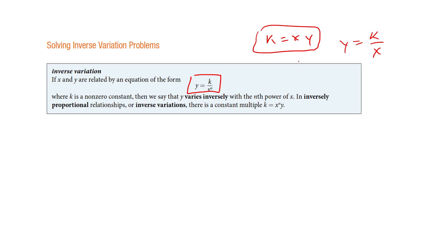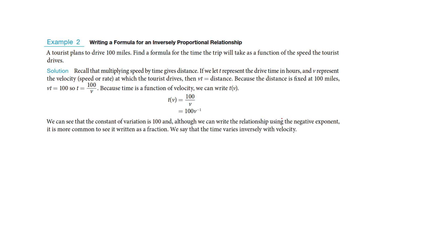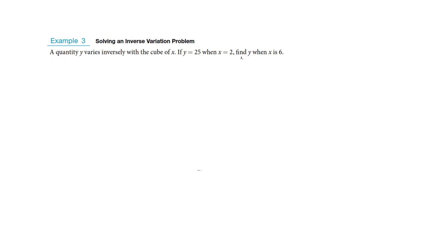Here's a real-world example. Velocity times time equals distance — how fast you're going times how long you're going, so rate times time equals distance. They're telling us we're going to go a distance of 100, and they want to see how the relationship works between time and velocity. They're in an inverse relationship — time is on top, velocity is on the bottom. As velocity goes up, time will go down, and if time goes up, velocity goes down. They have an inverse relationship.